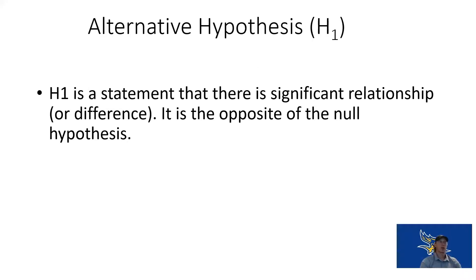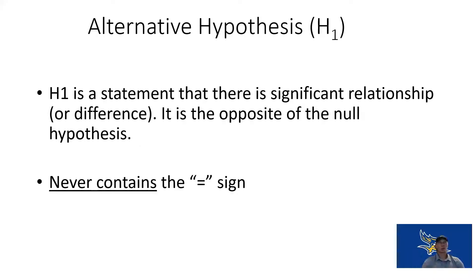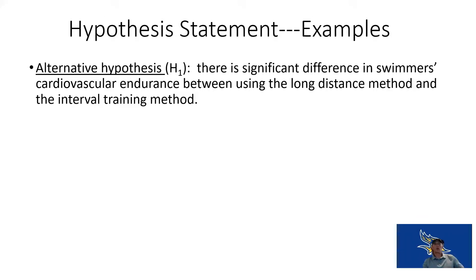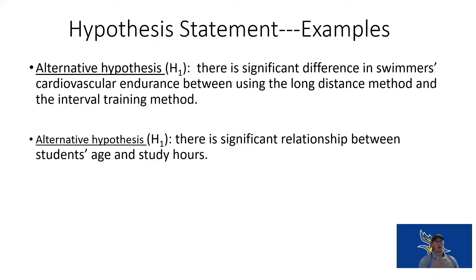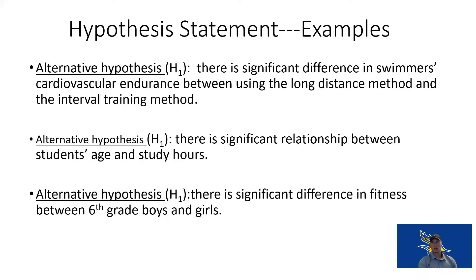The alternative hypothesis is the statement that there is a relationship or there is a difference — the opposite of the null hypothesis. This never contains an equal sign; we're saying they are not the same. Something is happening. For our swimmers example, the alternative hypothesis would be: there is a significant difference in swimmers' cardiovascular endurance between those who use long duration method and interval training method. Other examples: there is a significant relationship between study hours and students' age, or there is a significant difference in fitness between sixth grade boys and sixth grade girls.